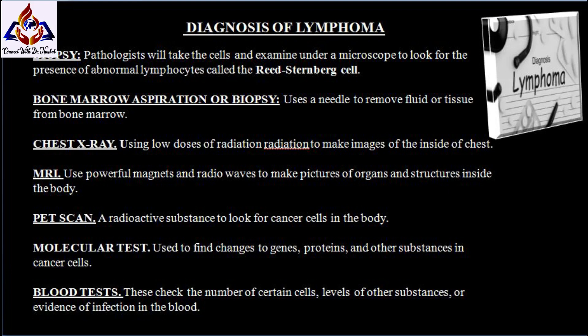A chest X-ray uses low doses of radiation to make images of the inside of your chest. MRI uses powerful magnets and radio waves to make pictures of organs and structures inside your body. PET scan is an imaging test that uses a radioactive substance to look for cancer cells. Molecular tests find changes to genes, proteins, and other substances in cancer cells to help determine which type of lymphoma you have. Blood tests check the number of certain cells, levels of other substances, or evidence of infection in your body.